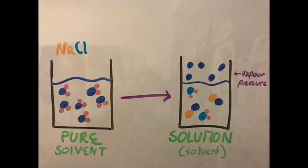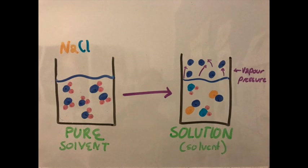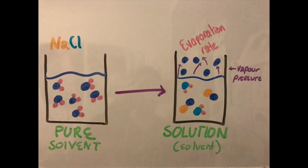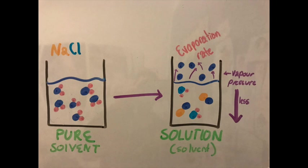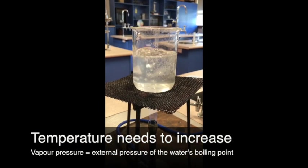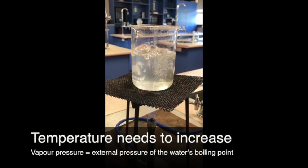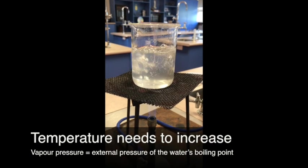When salt is added to water, the vapor pressure of the salt at which a liquid's evaporation rate is indicated is less than that of the pure solvent. So when the solution is boiled, the temperature needs to be increased in order for the vapor pressure to equal the external pressure of the water's boiling point.